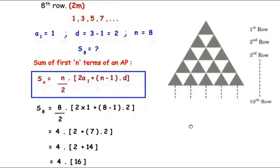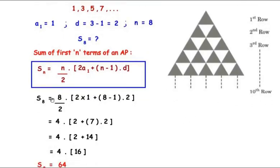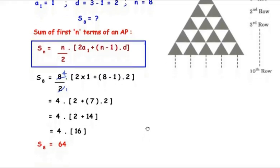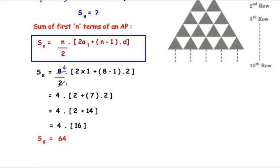Substituting values: S₈ = (8/2) × [2×1 + (8−1)×2] = 4 × [2 + 7×2] = 4 × [2 + 14] = 4 × 16 = 64. So the total number of triangles till the 8th row is 64 triangles.